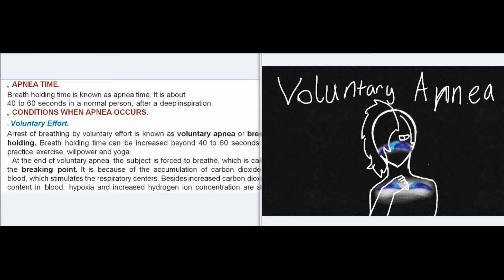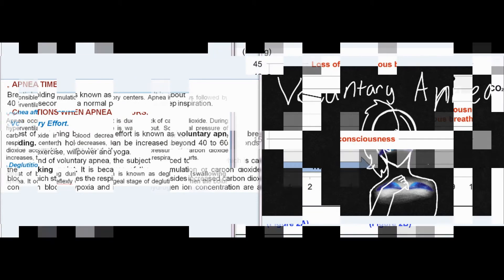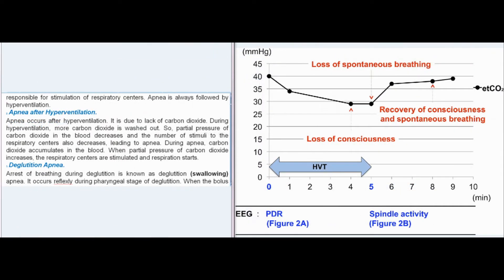The breaking point occurs because of the accumulation of carbon dioxide in blood, which stimulates the respiratory centers. Besides increased carbon dioxide content, hypoxia and increased hydrogen-ion concentration are also responsible for stimulation of respiratory centers. Apnea is always followed by hyperventilation. Apnea also occurs after hyperventilation, due to lack of carbon dioxide — during hyperventilation, more carbon dioxide is washed out, so the partial pressure of carbon dioxide in blood decreases, leading to apnea.